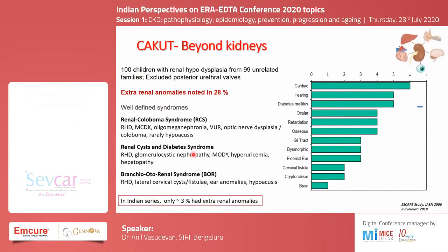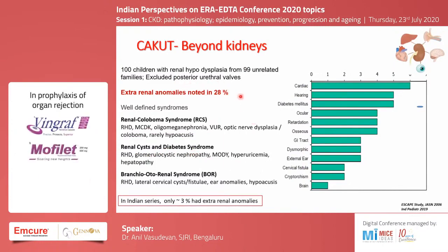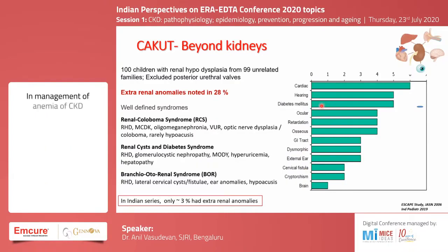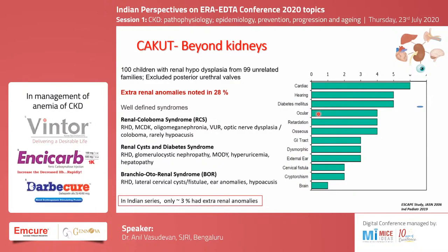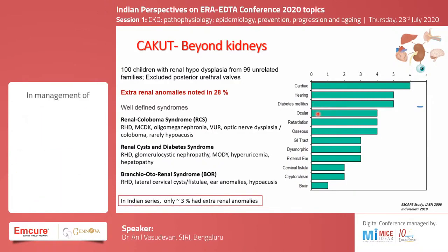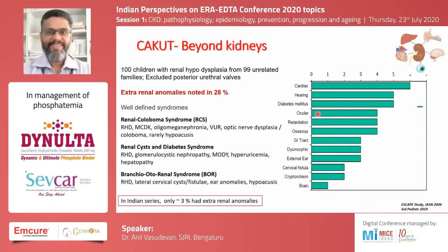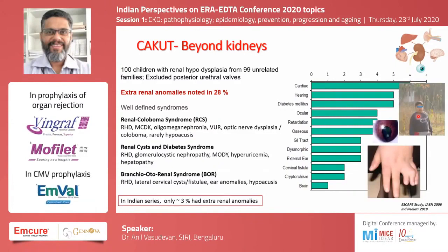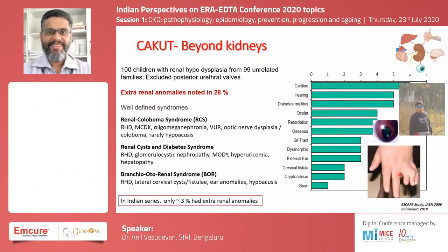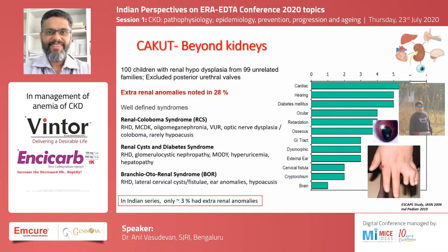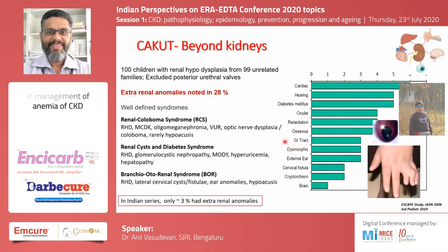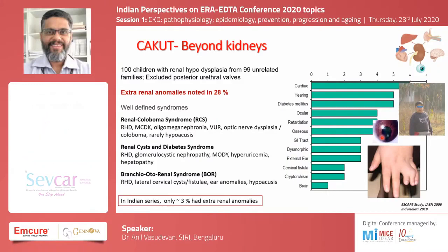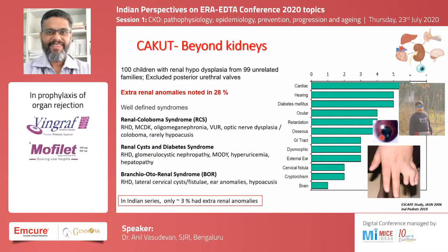When we talk of CAKUT, we need to look beyond the kidneys. As shown in a cohort study of 100 children, nearly one-third had extra-renal anomalies, mostly involving cardiac, hearing, and diabetes—especially those with HNF1-beta mutations—as well as ocular and ear anomalies. It is important that when we have a child with CAKUT, we look for extra-renal anomalies, and vice versa. Extra-renal findings help us identify a probable genetic etiology of the underlying CAKUT.